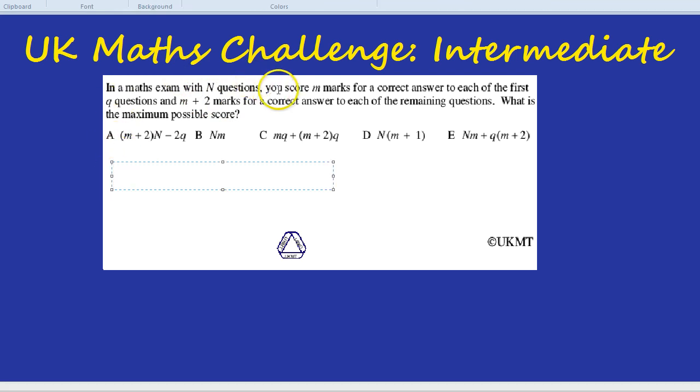For the first Q questions here you can score M marks for each of them. So what's our total score? It'll be Q times by M. So for those first Q questions if the marks we could get are M for each of them, our total score would be Q times M or MQ or QM, same thing.